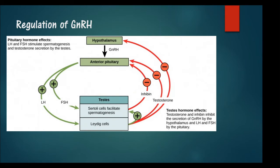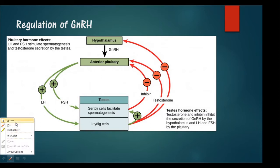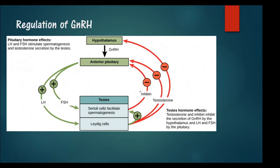Regarding regulation of GnRH in males: the hypothalamus releases GnRH which acts on the anterior pituitary. The anterior pituitary produces LH and FSH, which targets the testes and increases spermatogenesis. The Leydig cells are also activated, further supporting spermatogenesis. The testes also produce inhibin and testosterone, both of which exert negative feedback on the pituitary and the hypothalamus. Testosterone has a negative effect on both, while inhibin acts on the pituitary.